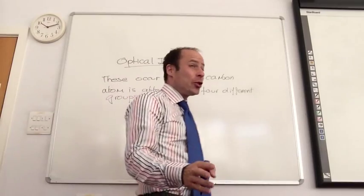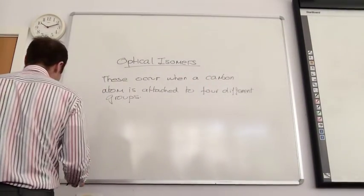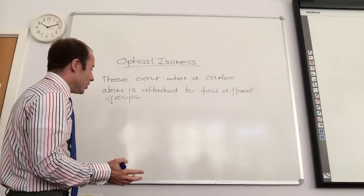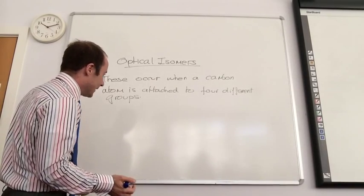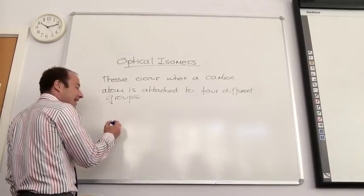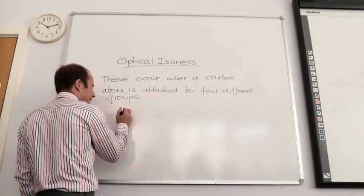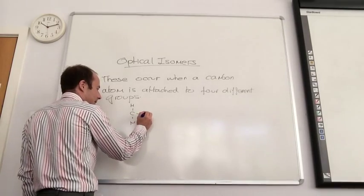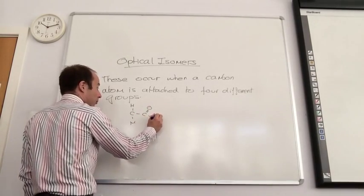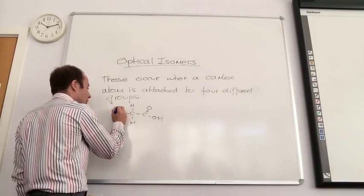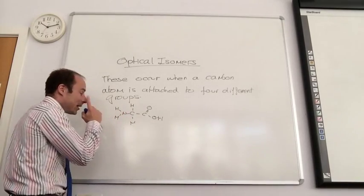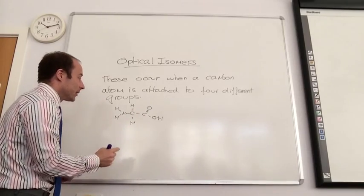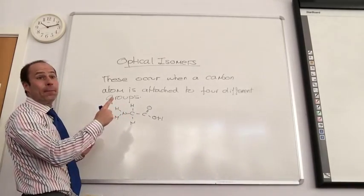So what they always want you to do is they want you to draw it. So I'm going to use an amino acid. Let's have a look. The simplest amino acid is glycine. Glycine is this guy. He is not an optical isomer. Because if I look at that carbon I've got two hydrogens attached so he is not an optical isomer.